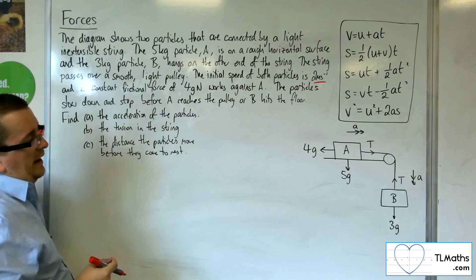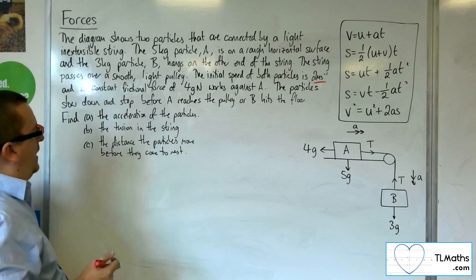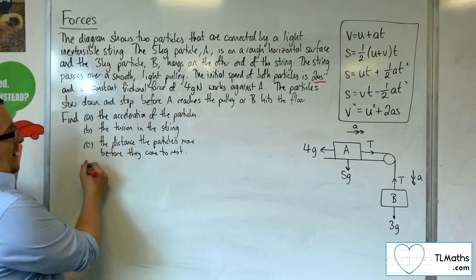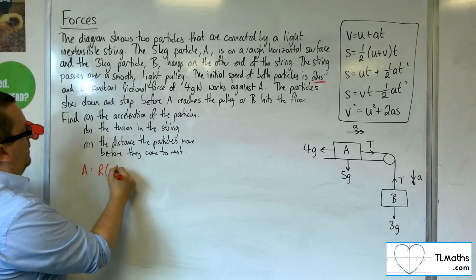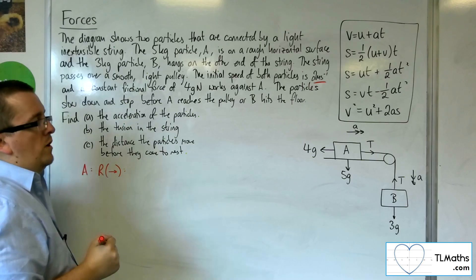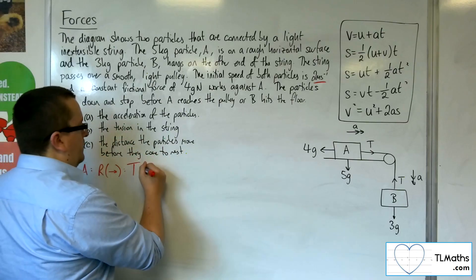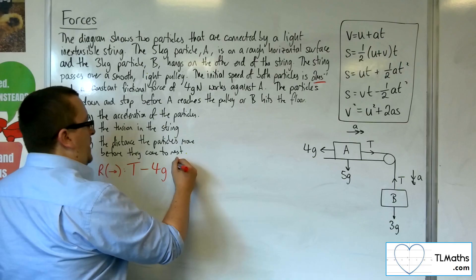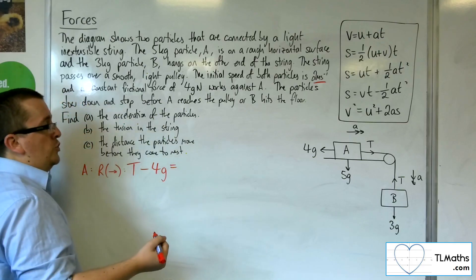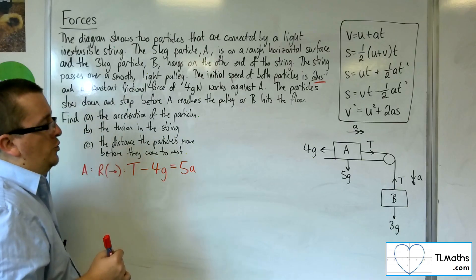So what we're going to do is set up a couple of equations to get that ball rolling. Let's look at particle A, and we're going to resolve that horizontally, taking to the right as positive. Now I've got the tension working to the right. I've got 4G working against me. And that's got to be equal to the mass times the acceleration, so 5 times A. So there's my first equation.